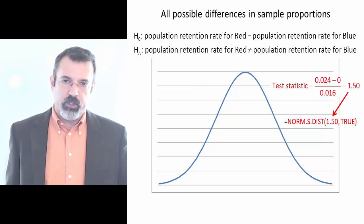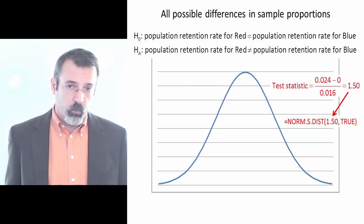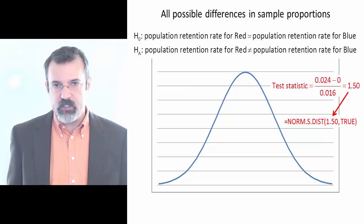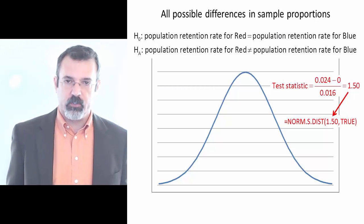To find the p-value, we use the norm.s.dist function. We use this because differences in sample proportions are standard normally distributed.